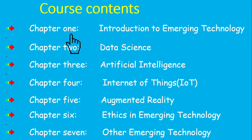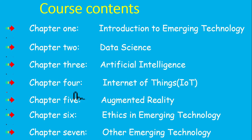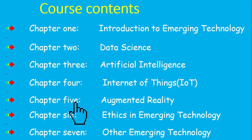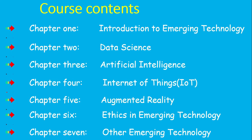So what chapters do we have? Chapter one is Introduction to Emerging Technology. Chapter two is Data Science and Big Data. Chapter three is Artificial Intelligence. Chapter four is Internet of Things. Chapter five is Augmented Reality and Virtual Reality. Chapter six is Ethics in Emerging Technology. Chapter seven covers other emerging technologies.